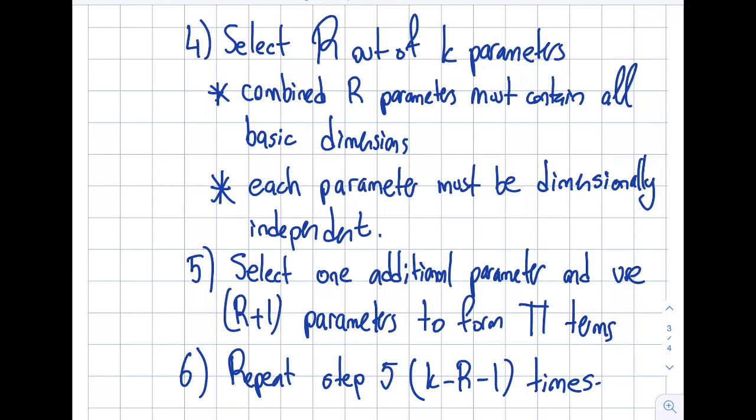And then the last step is I'm going to repeat the step number five which is to having these four parameters as an example and I'm going to repeat this k minus r minus 1 times. Let's say that k is five, r is three, then I will repeat this only one time because five minus three minus one is one.